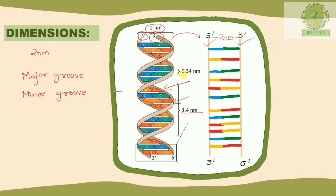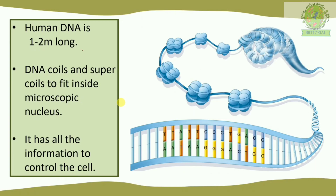We also have a defined distance between consecutive base pairs. There is a distance of 0.34 nanometers between any two base pairs on a single strand. So generally we always have 0.34 nanometers distance between any base pair.